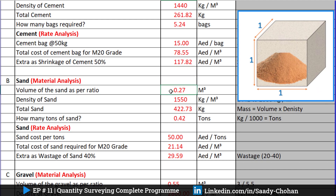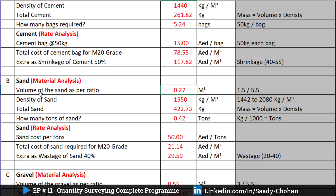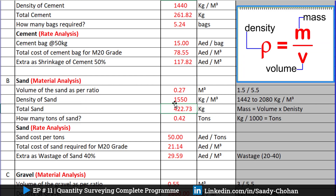The next item is sand. First, we get the ratio of sand as per the grade — 1.5. Using the same concept, I divide 1.5 by the sum of the ratio to get the volume of sand. Then I use the density of sand, which ranges between 1,400 to 2,000 kg per cubic meter depending on conditions — wet, dry loose, dry packed, wet packed, natural, or manufactured. I'm assuming 1,550 kg per cubic meter. Multiplying volume by density gives the total mass.